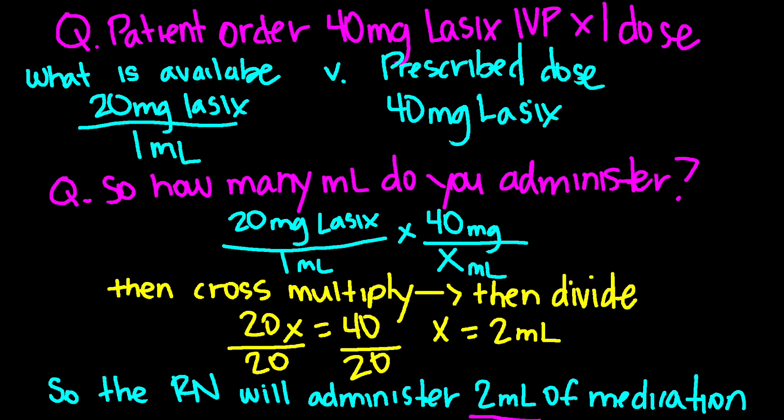Your client has an order to administer 40 milligrams of Lasix IV, times one dose. What is available? You have 20 milligrams of Lasix. You are going to cross multiply as shown in the demonstration. Once you cancel everything out, you get 40 divided by 20, which equals 2 mLs. The RN will administer 2 mLs.